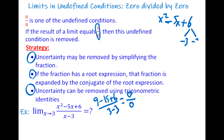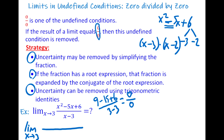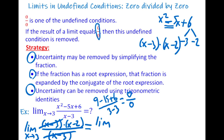We factor x² - 5x + 6 by finding two numbers that multiply to 6 and add to -5, which are -3 and -2. So the expression factors as (x - 3)(x - 2). The limit becomes (x - 3)(x - 2) divided by (x - 3), and we can cancel the common factor. What remains is the limit of (x - 2) as x goes to 3, which gives 1.